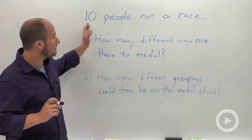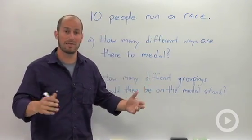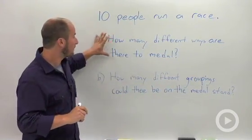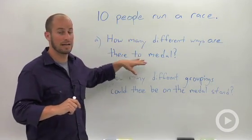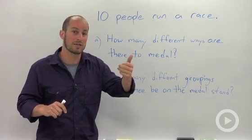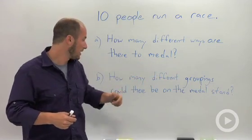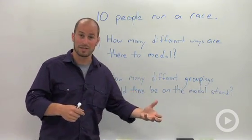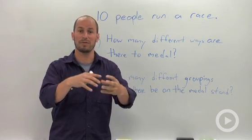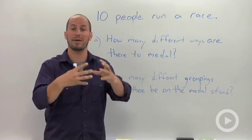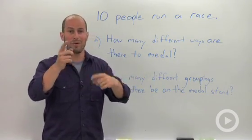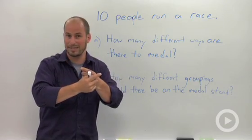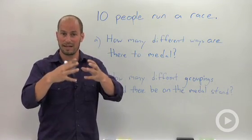So we have a running a race. There's 10 people in it and there's two things we're concerned with. The first is how many different ways are there to medal? So that takes into account gold, silver, bronze, or other words, first, second, third place. The other one is how many different groupings could there be on the medal stand? So basically there you have a trio of people. No matter what that trio is, it's going to be the same. So if the gold and the bronze person switch places, they're still the same combination on that medal stand.